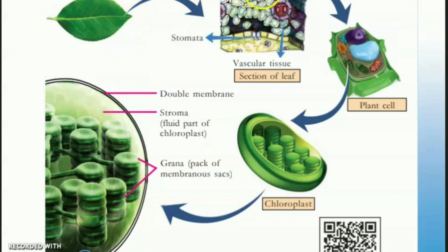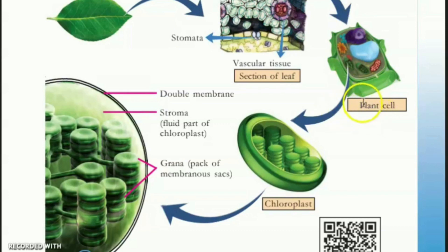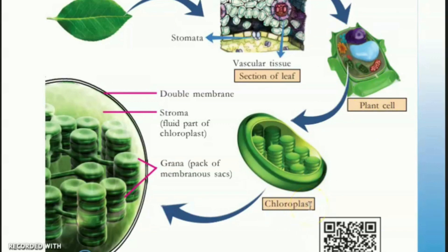This is the epidermis of a leaf. This is the chloroplast. The epidermis has a small part called stomata, which is used for gaseous exchange — carbon dioxide enters through the stomata. This chloroplast is shaped like a coin, with coins arranged one over the other.